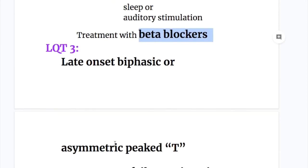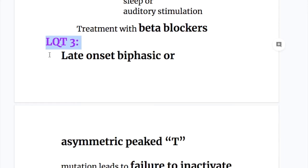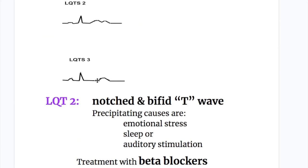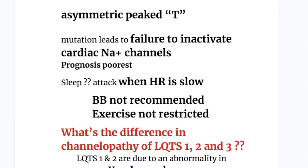LQT 3 now. LQT 3 has a late onset biphasic or asymmetric peak T wave. This is late onset peak T wave, biphasic or asymmetric compared to the others. This one has a late onset T wave. In LQT 3, mutation leads to failure to inactivate cardiac sodium channels. Prognosis is poorest in LQT 3 and it comes on during sleep. Why? Attacks come when the heart rate is slow. Beta blockers not recommended for LQT 3.